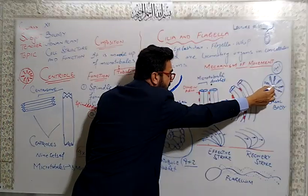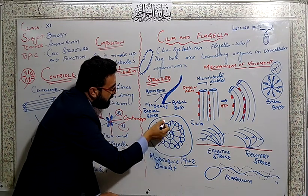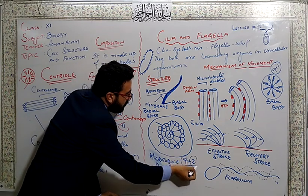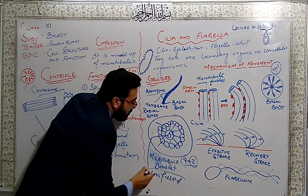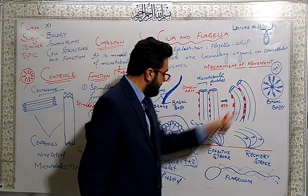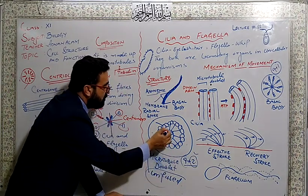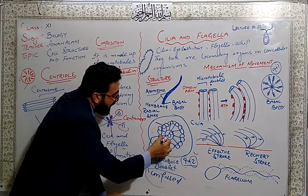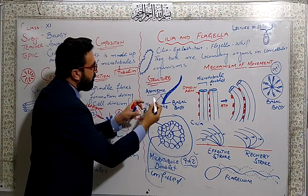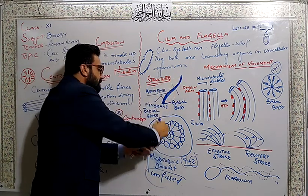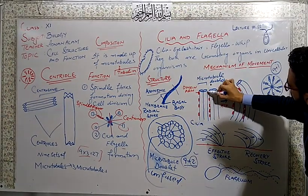The internal structure consists of microtubules - the 9 plus 2 arrangement. What does it mean? Nine doublets in the periphery and two tubules in the center. This is the structure of the basal body which has 9 plus 1, and this long cylinder is called axonema which has 9 plus 2 arrangement.